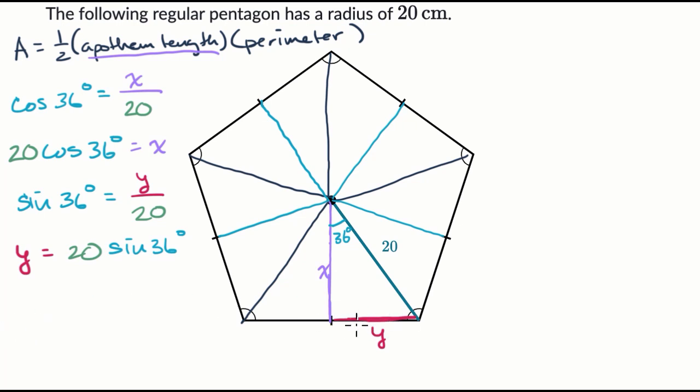Now, why is that useful? Well, y is exactly half of this, and then we have five of those sides. So another way to think about it is if we want the entire perimeter, the perimeter's going to be 10 of these y's.